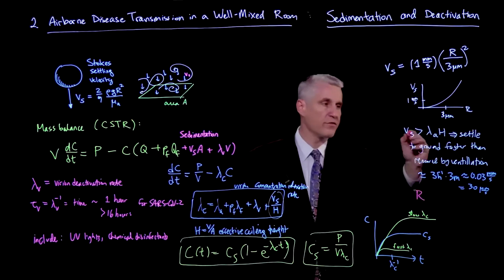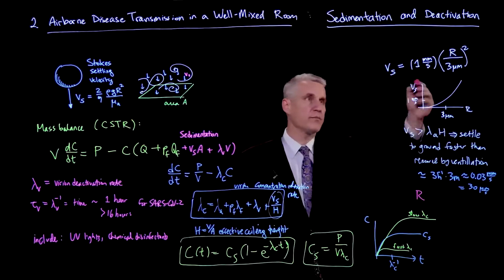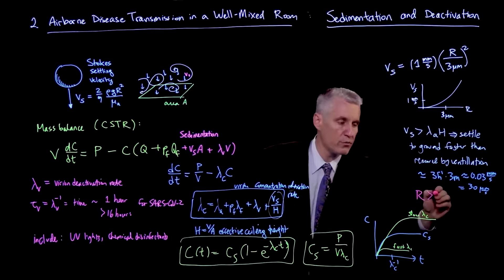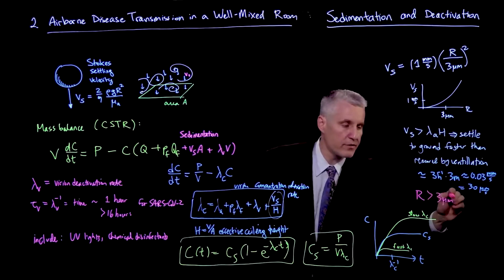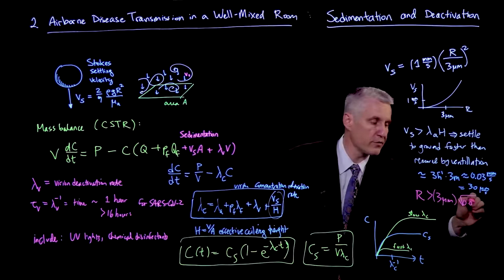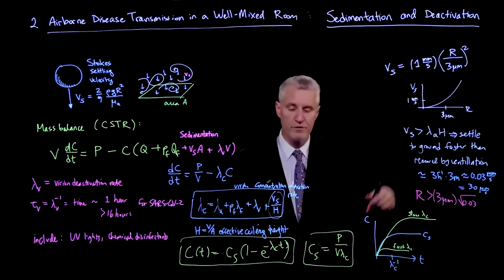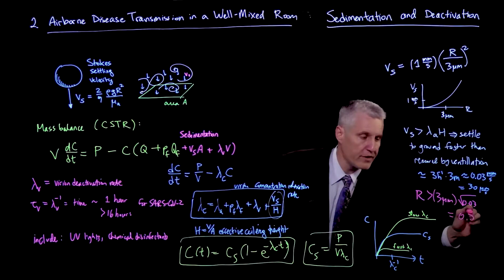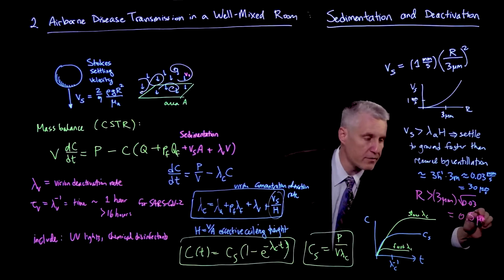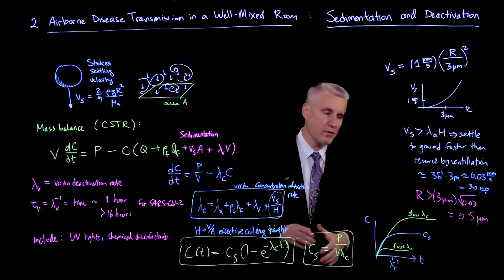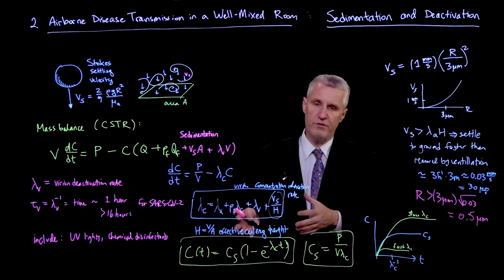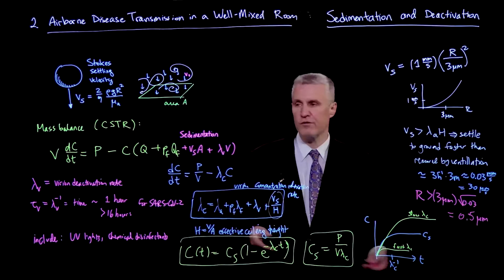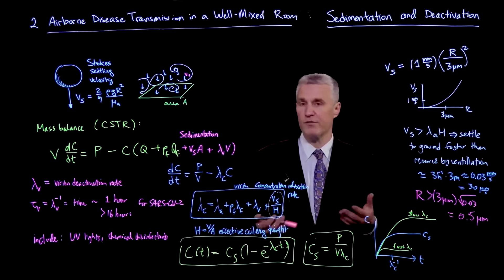So that's a typical speed above which particles will be sedimenting to the ground. If I now convert that back to a radius, then in order for this condition to hold, because V goes like R squared, I basically have to take a square root. So the R will be bigger than sort of 3 microns times the square root of 0.03, and that's going to give me 0.5 microns.